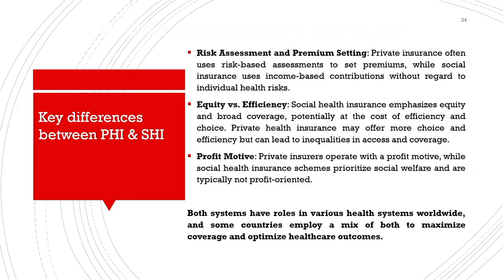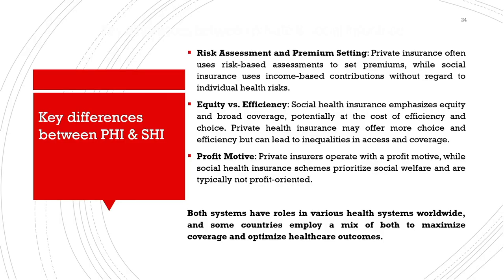In social health insurance, eligibility is typically universal — covering all residents, employed persons and their dependents, or targeted groups like poorer persons. Premiums are generally not based on individual health risks, helping to prevent discrimination based on health status and minimizing moral hazard and adverse selection. Private health insurance's primary goal is profit for the insurance company, with focus on individual responsibility and choice, while social health insurance's primary goal is to provide equitable access to healthcare services for all members of society.